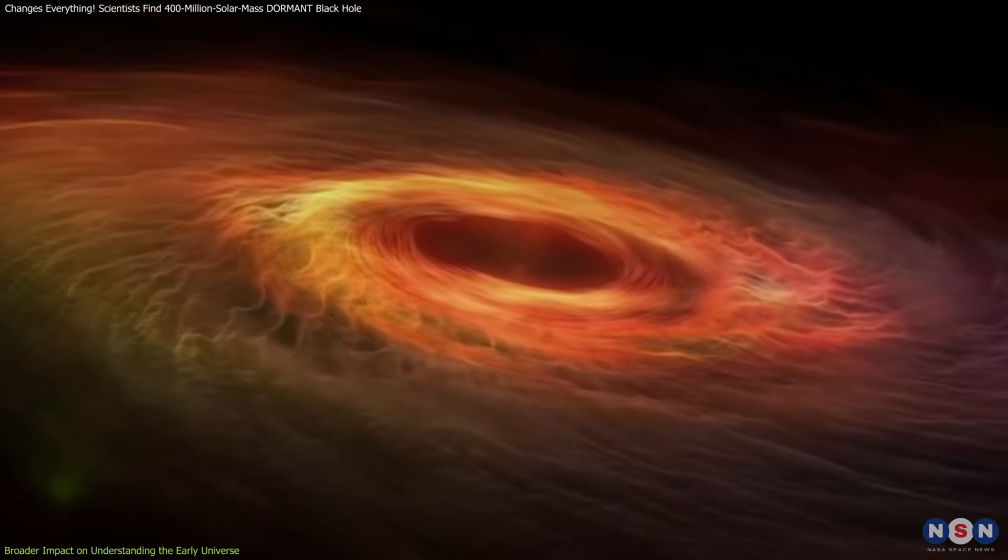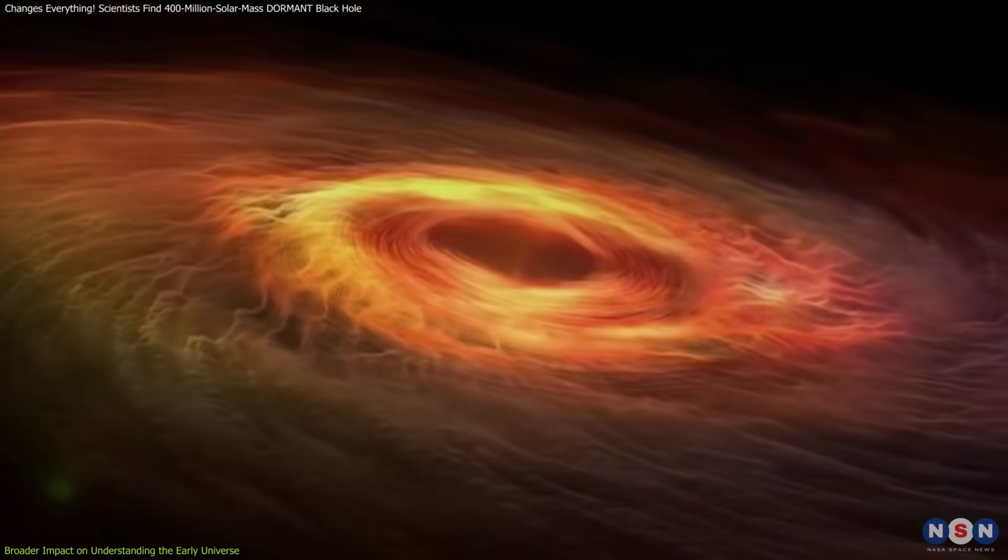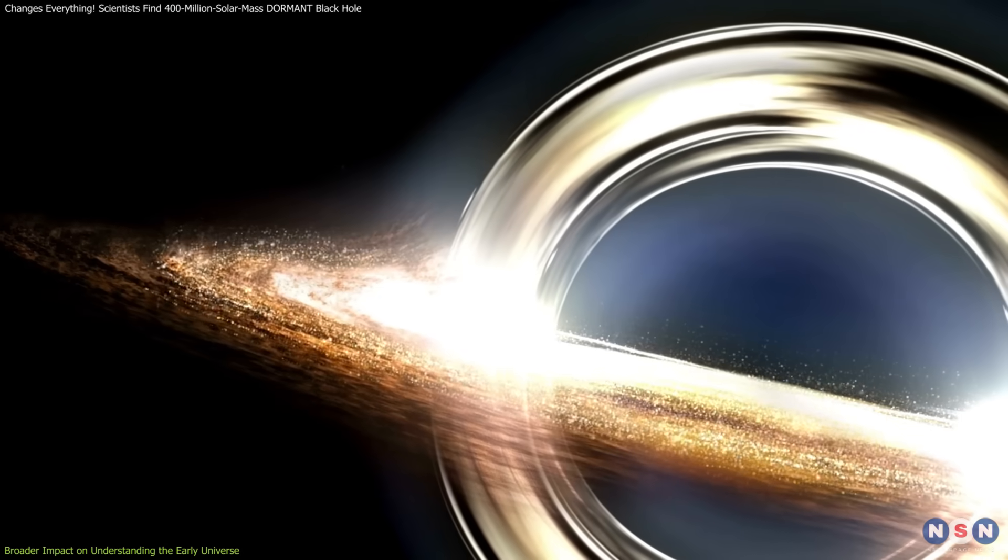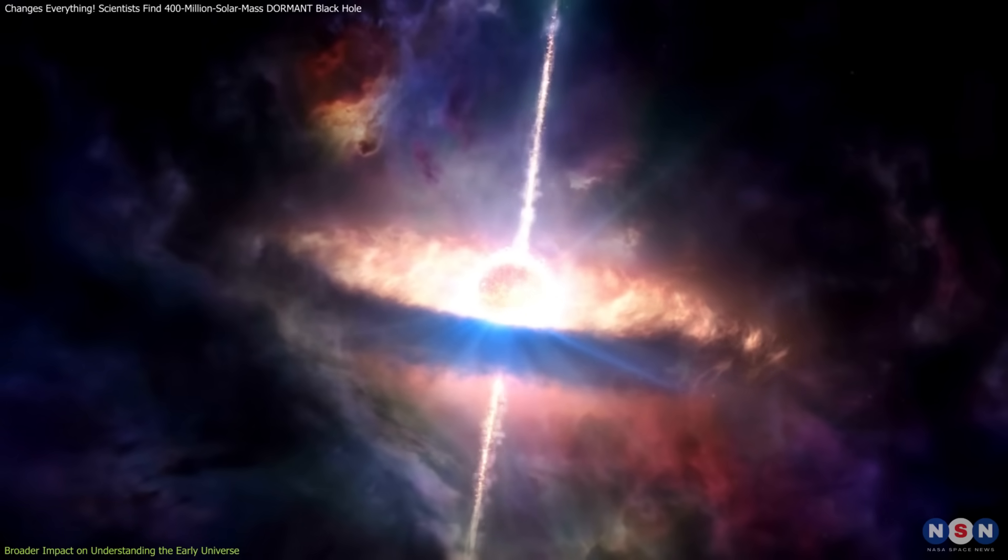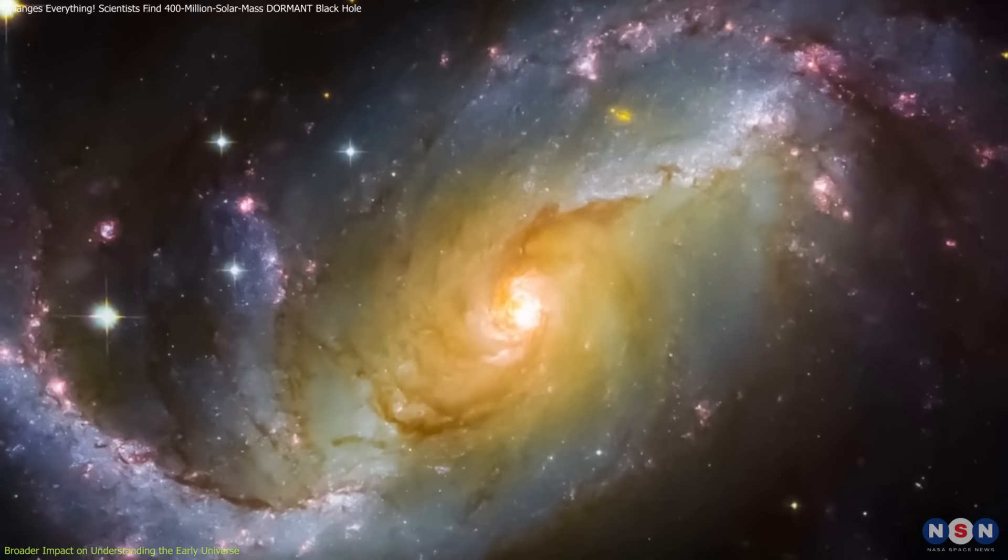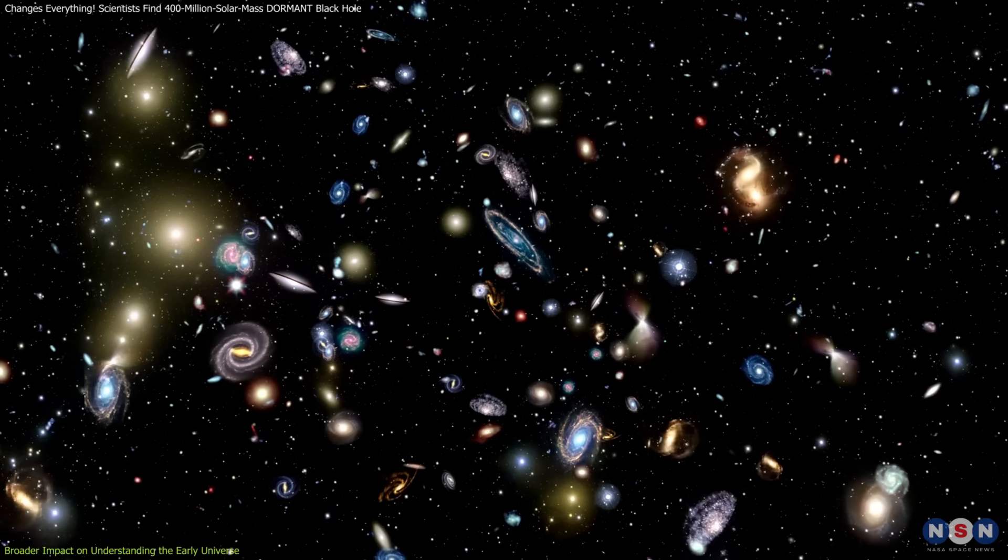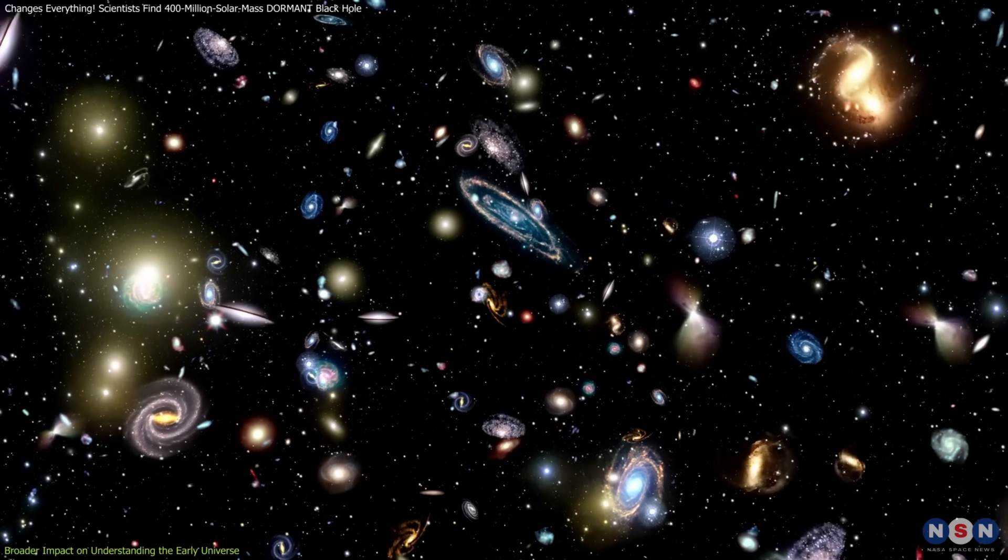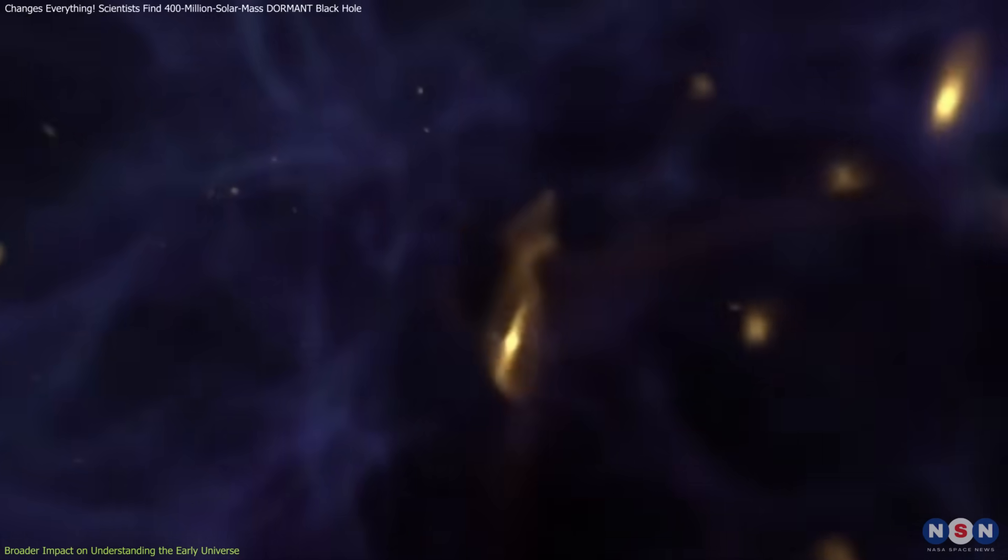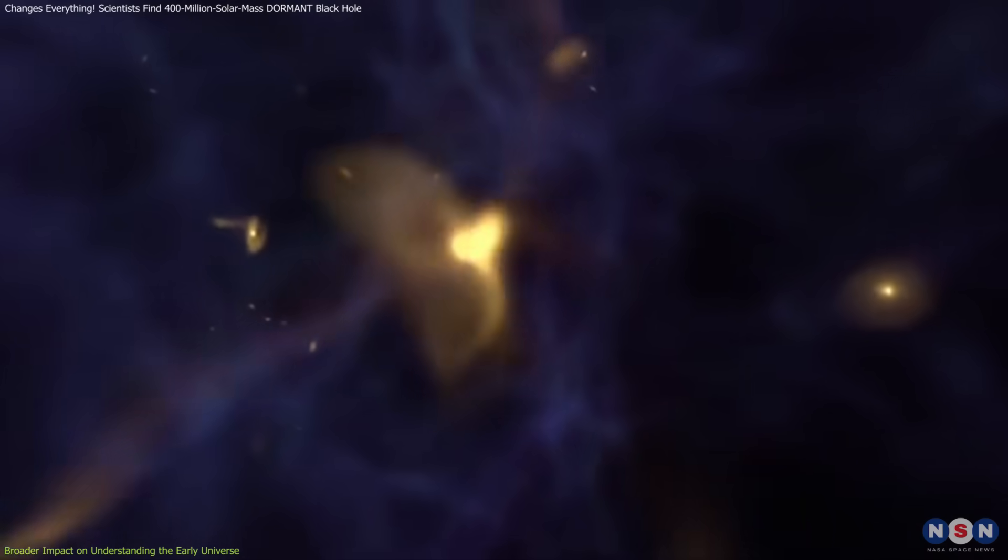Dormant black holes may also stabilize galaxy evolution. Without the disruptive effects of active accretion, such as jets and radiation, they could allow galaxies to grow more uniformly. Understanding this dynamic might offer valuable insights into how galaxies like our Milky Way formed and evolved over billions of years.